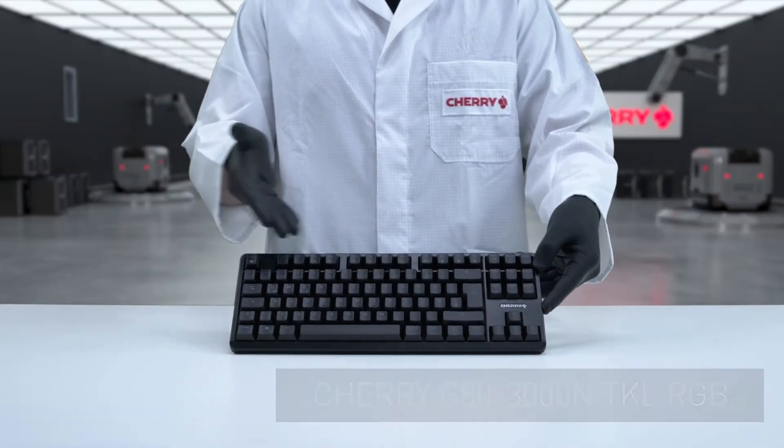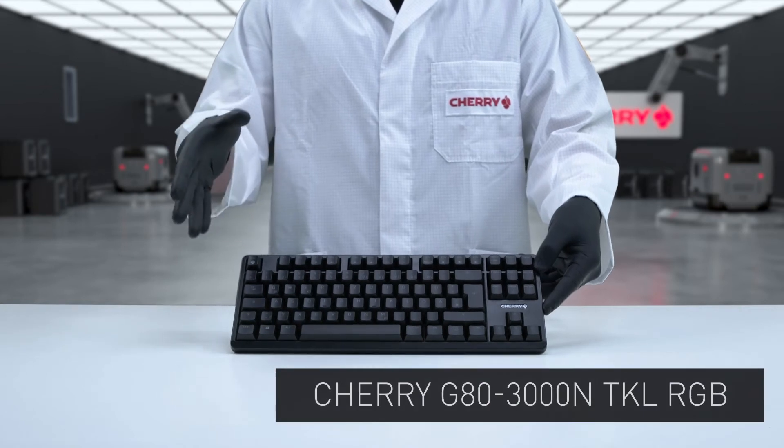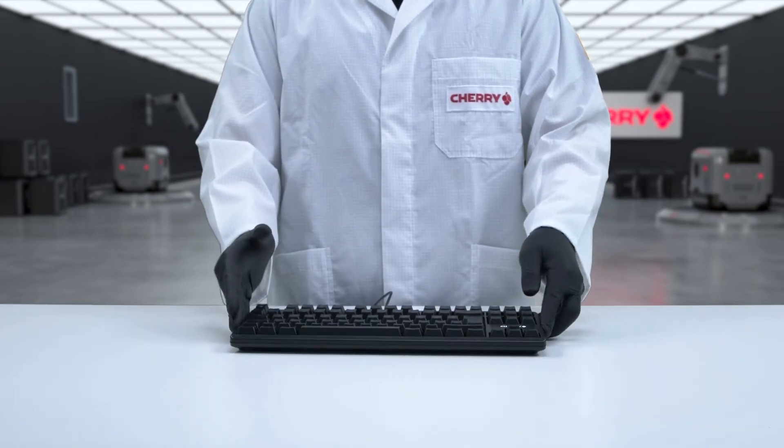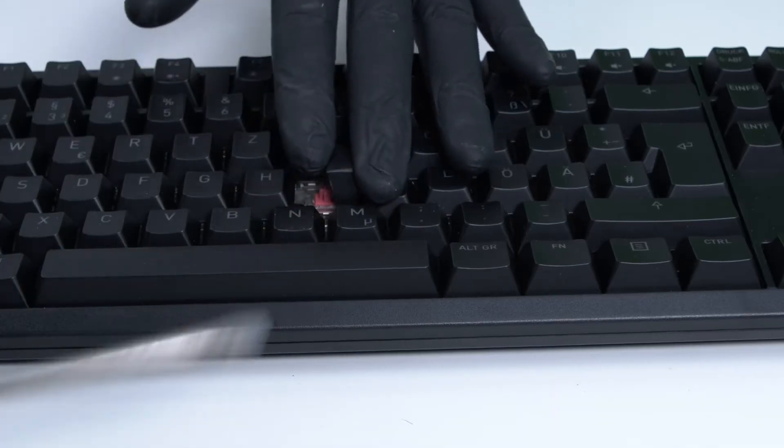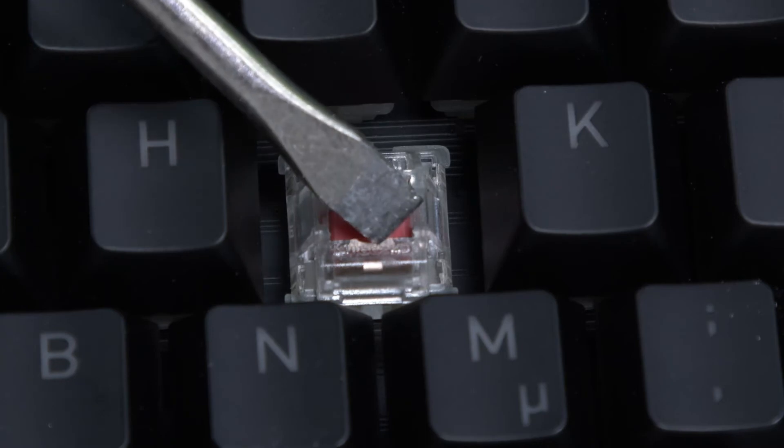In mechanical keyboards like the Cherry G80-3000N TK-L RGB, the PCB runs over the entire keyboard and each key has its own switch, which is soldered directly onto the PCB.